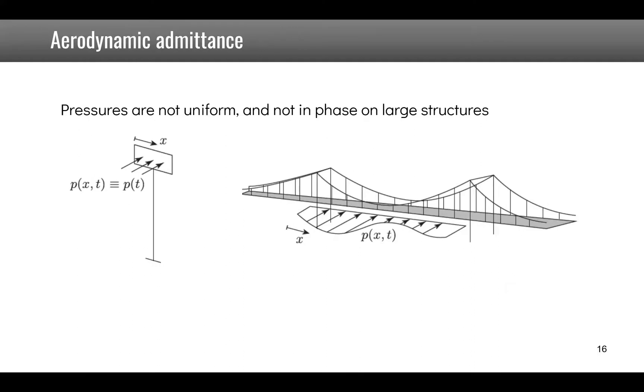In order to compute the total force applied to a structure, we have to understand the concept of aerodynamic admittance. This simple example shows that if you have a small object, the pressures are more likely to be in phase, so the total force is high. Whereas if you have a bigger object, those forces will not always be in phase, leading to a reduced total force. This is represented by a coefficient called the admittance.